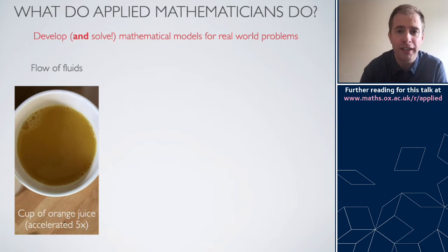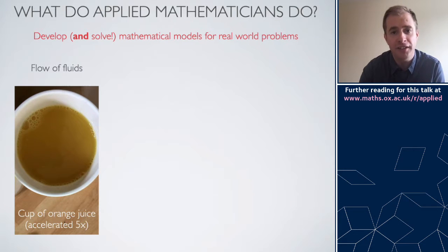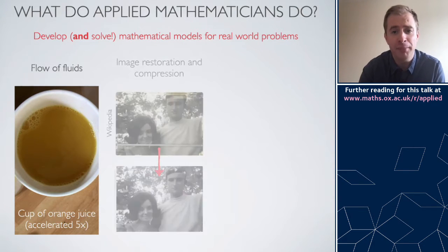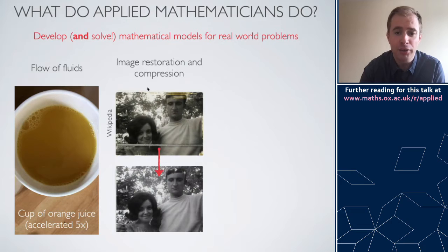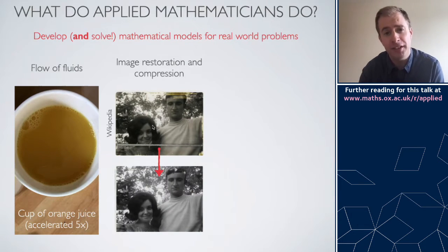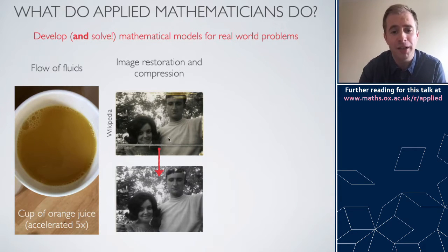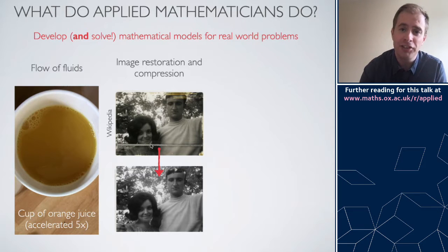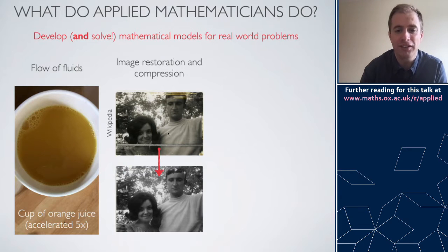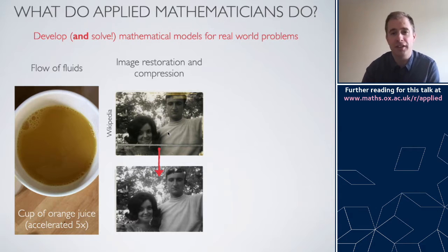There are of course lots of applications of Applied Maths to problems associated with data and images. For example, there's a lot of work going on in how you restore images — if you take a photograph and then print it, that photo will become creased over many years, and you might want an algorithm that allows you to digitize that image again and smooth out the creases. There are indeed what's called image in-painting algorithms that allow you to do just that.